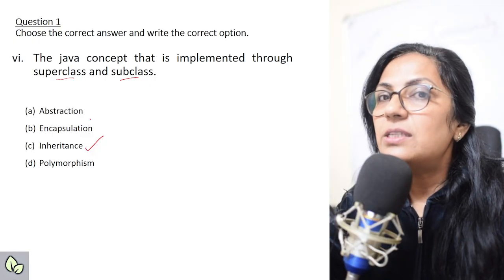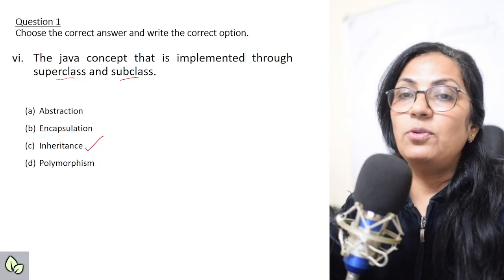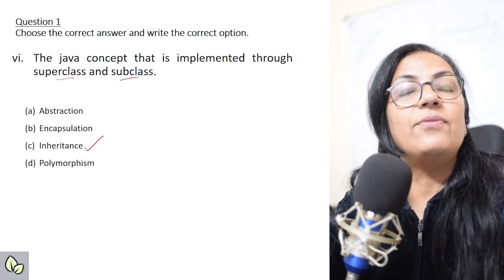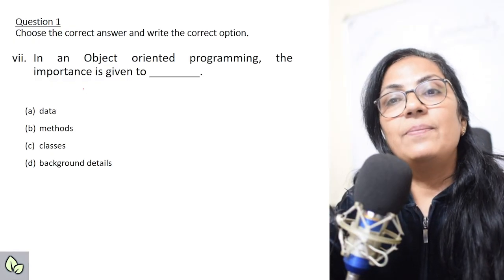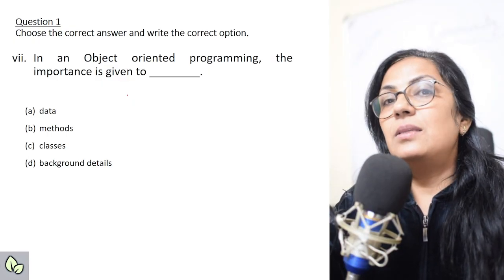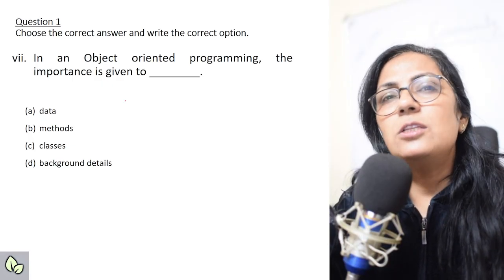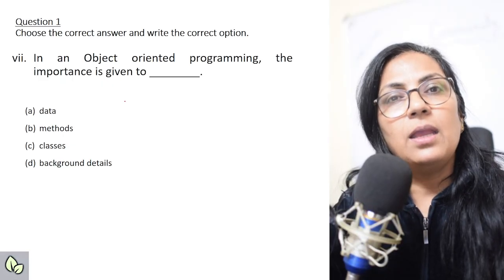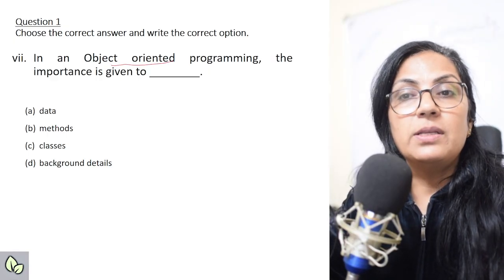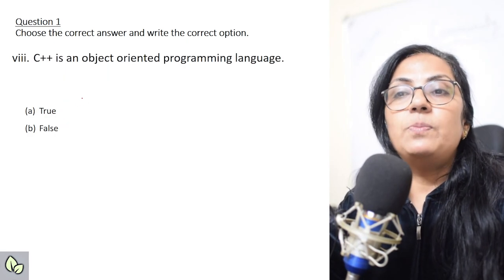Children, one question definitely will be in your exams from the principles of object-oriented concepts. Prepare abstraction, encapsulation, inheritance, and polymorphism properly. The next is: 'In object-oriented programming, the importance is given to what?' In this era of OOP, the importance is given to data security, so in object-oriented programming the importance is given to data.